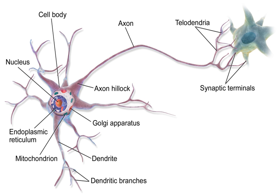A neuron affects other neurons by releasing a neurotransmitter that binds to chemical receptors. The effect upon the postsynaptic neuron is determined by the type of receptor that is activated, not by the presynaptic neuron or by the neurotransmitter. A neurotransmitter can be thought of as a key, and a receptor as a lock. The same neurotransmitter can activate multiple types of receptors. Receptors can be classified broadly as excitatory, causing an increase in firing rate; inhibitory, causing a decrease in firing rate; or modulatory, causing long-lasting effects not directly related to firing rate.